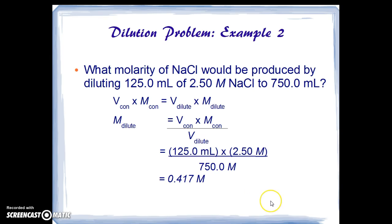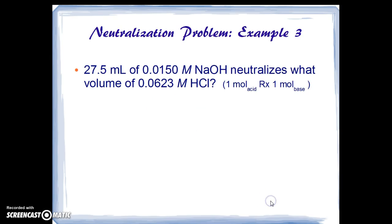Now we'll move to the neutralization type problems. Our third example says that 27.5 milliliters of 0.0150 molar sodium hydroxide would neutralize what volume of 0.0623 molar hydrochloric acid? So the acid is more concentrated than the base. So we'll probably not neutralize as many as 27 milliliters when we neutralize the acid.